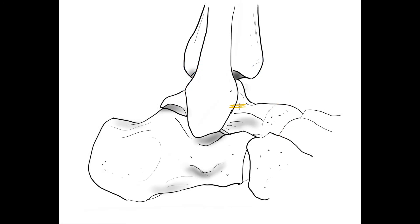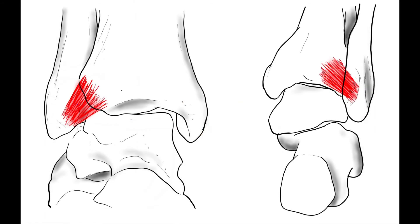The lateral ligaments are: the anterior talofibular ligament, which runs from the anterior margin of the lateral malleolus to the adjacent region of the neck of the talus, and has two fascicles — the superior, which is intraarticular, and the inferior. The calcaneofibular ligament goes from the malleolar fossa at the posterior medial side of the lateral malleolus to the tubercle on the lateral surface of the calcaneus. The posterior talofibular ligament goes from the malleolar fossa at the medial side of the lateral malleolus to the posterior process of the talus. From anterior, we can see the two fascicles of the anterior talofibular ligament and the calcaneofibular ligament; from posterior, the posterior talofibular ligament.